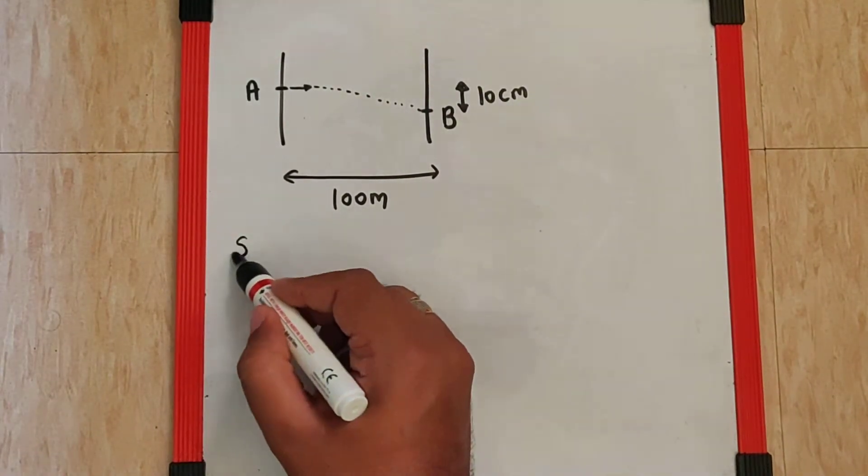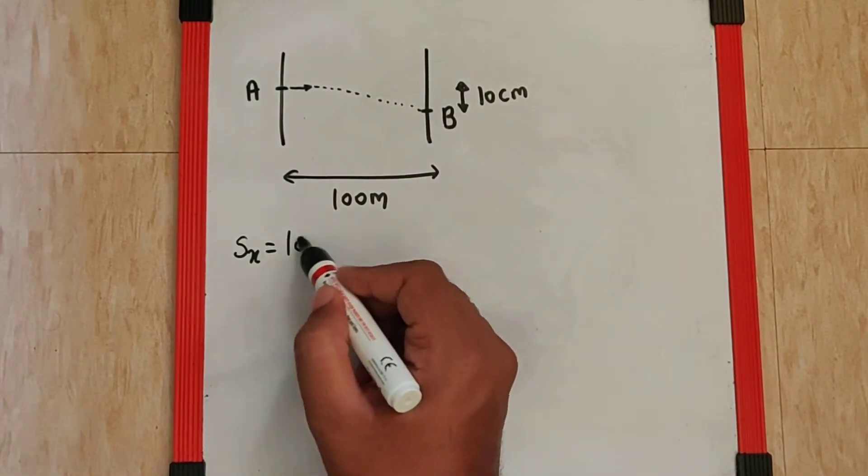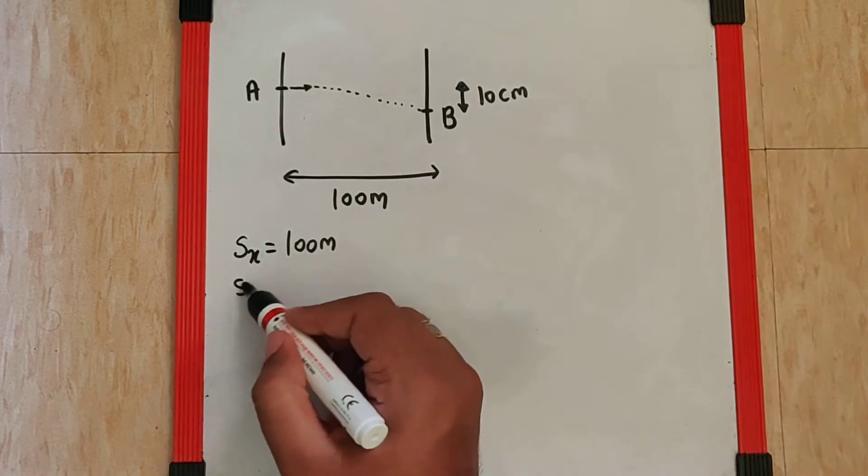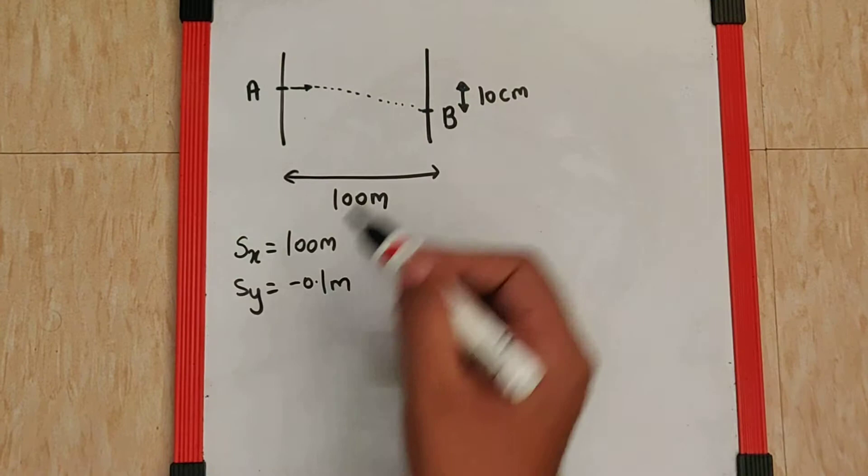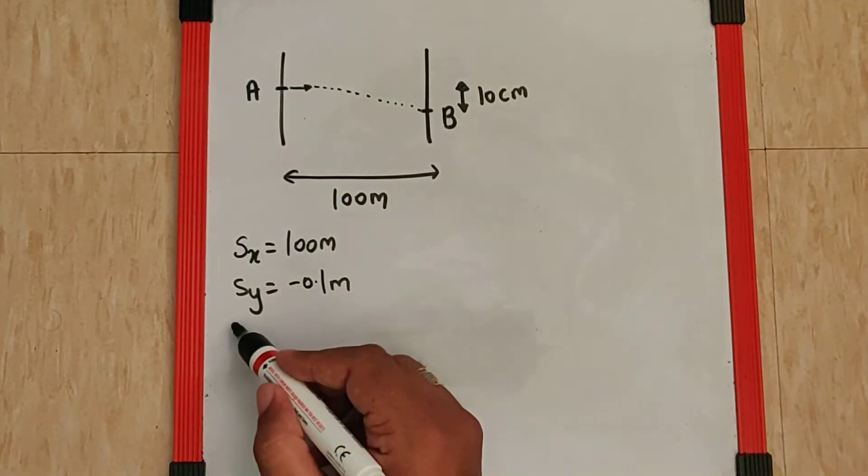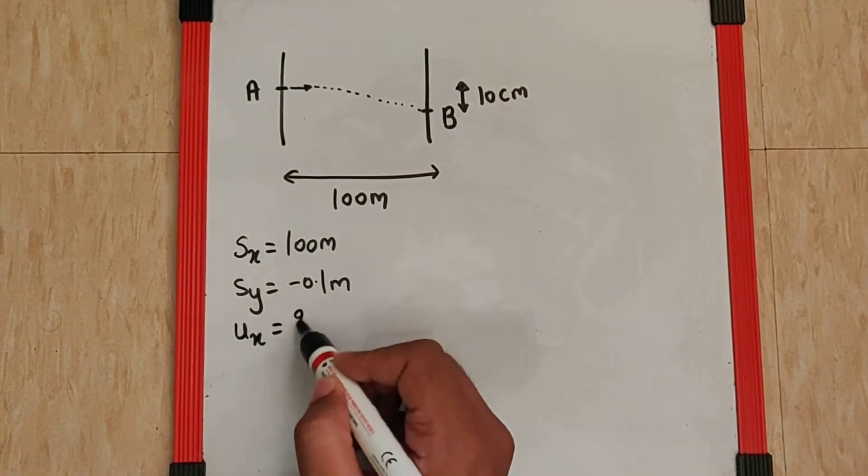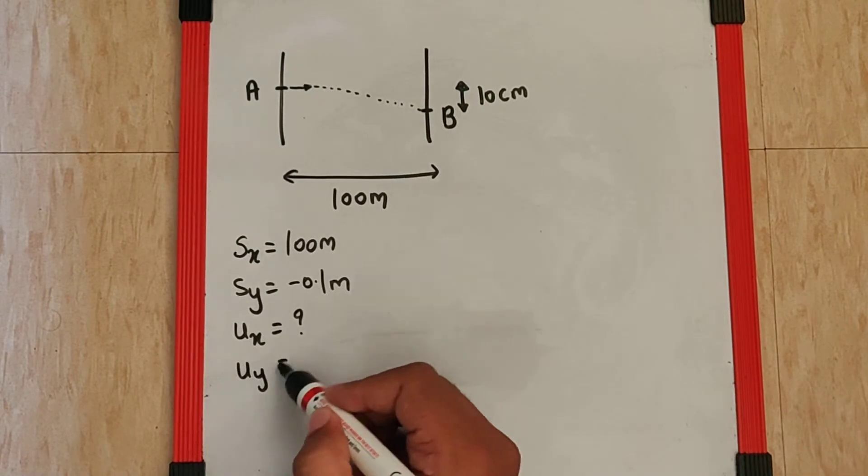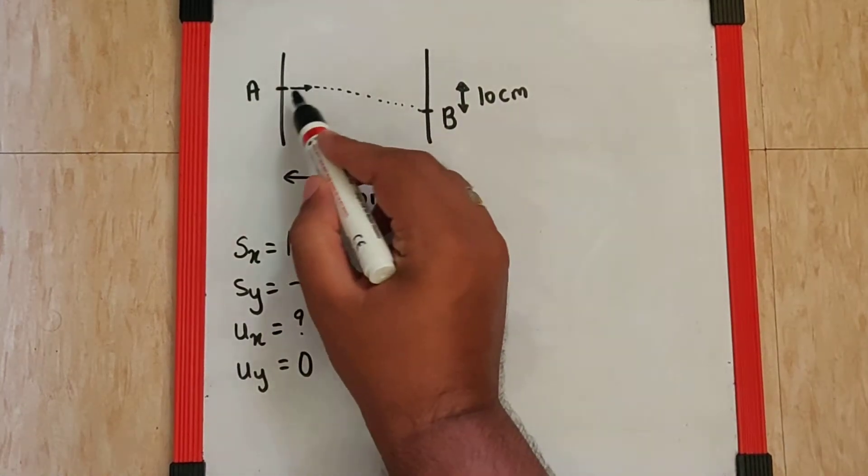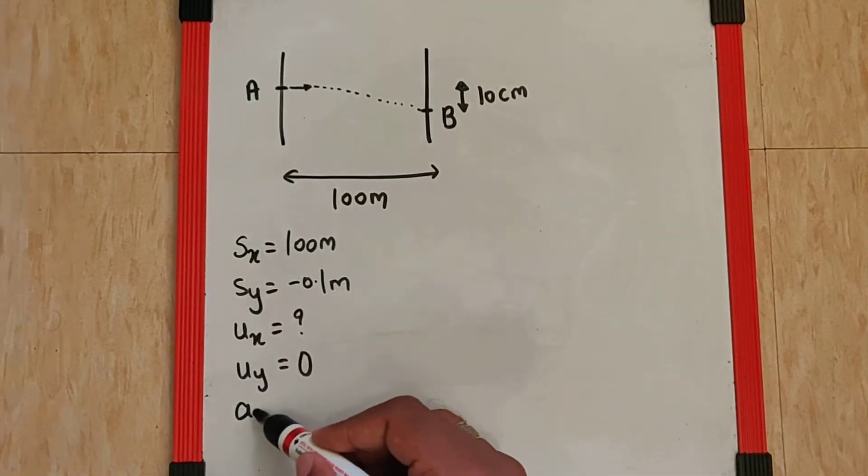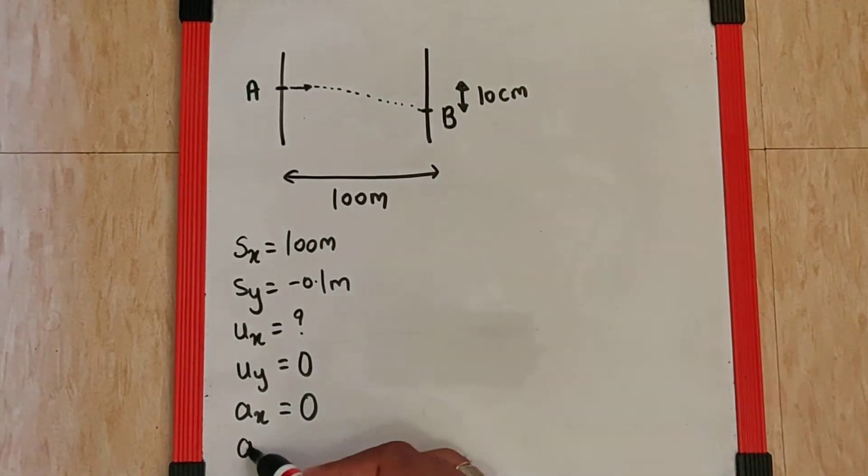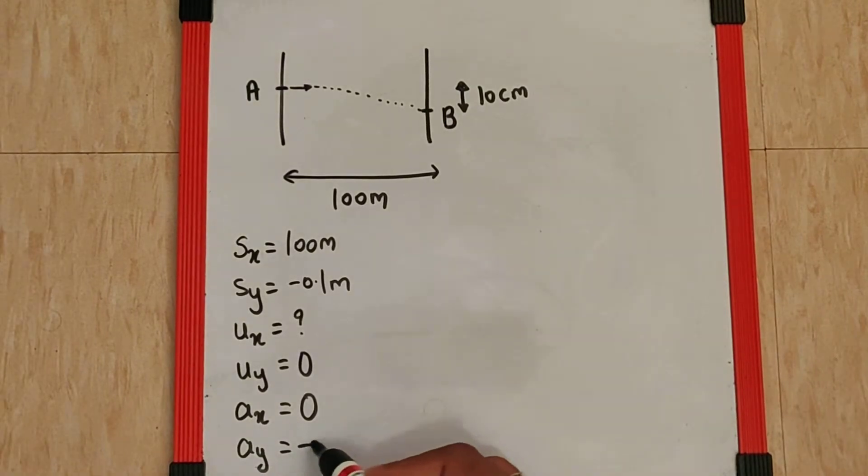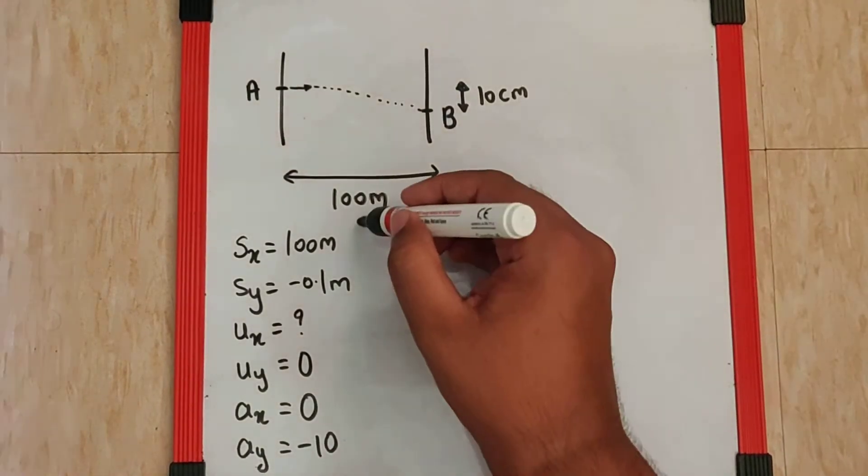I can say Sx, the horizontal distance covered is 100m. The vertical distance covered is the height which is minus 0.1m. I am using minus because it is going lower. Ux, I guess we are supposed to find that. Uy, we can assume it to be 0 because it was only horizontal velocity. Ax, we can assume it to be 0 because there is no wind acting here. And Ay is the gravity which is minus 10.